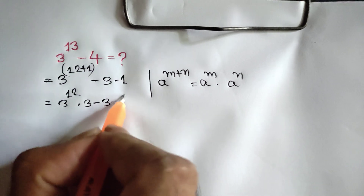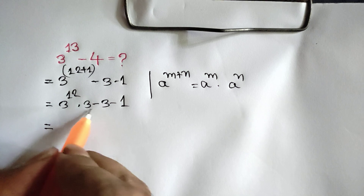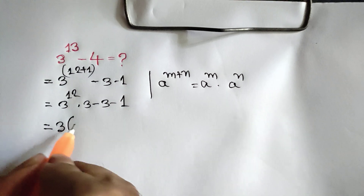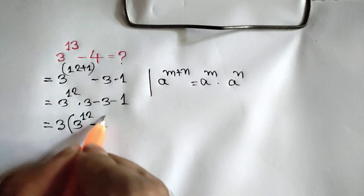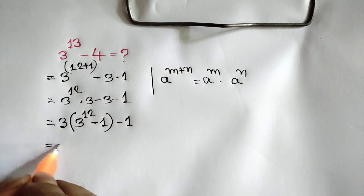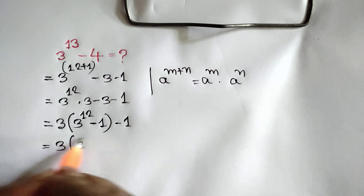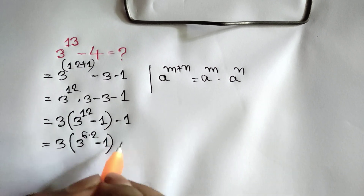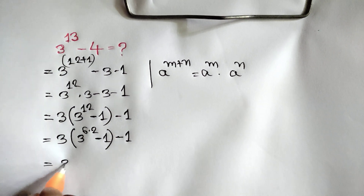Minus 3 minus 1. Now taking common 3 from the first two terms, we will get 3 times 3 to the power 12 minus 1, and this negative 1 is equal to 3. This 3 to the power 12 can be written as 3 to the power 6 times 2, minus 1, and this negative 1 is equal to 3.